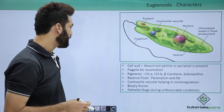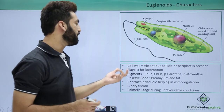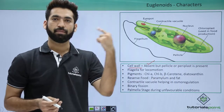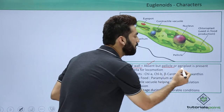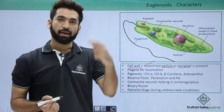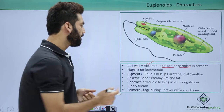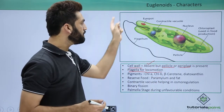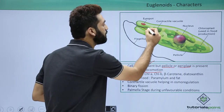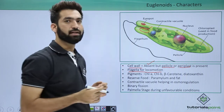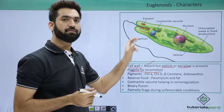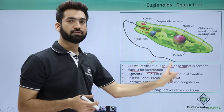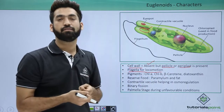The cell wall is absent, so the cell membrane has a particular outer layer called the pellicle or periplast, which is very elastic in nature. There are two flagella for locomotion — one long and one small. The large flagellum is responsible for motility while the small flagellum does not play a role in motility.